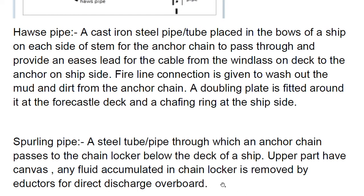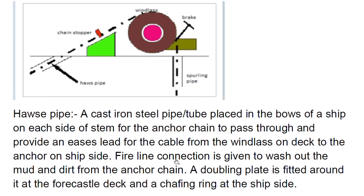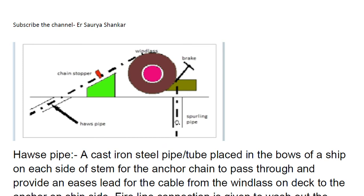A common question is how we get rid of the water that accumulates in the chain locker — and that is through an eductor, which directly discharges the accumulated water overboard. So these are the two important definitions of spurling pipe and hawse pipe, and how water accumulation in the chain locker is handled. Thank you.